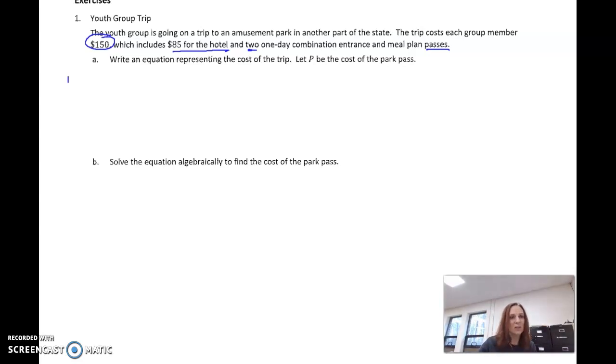So we need to write an equation letting P represent the cost of the park pass. In that $150, two things are included. Our hotel, costing me $85, and then our park passes. My park pass—we're going to get two of those, so two times P. P represents the cost of one pass. I want two of them.